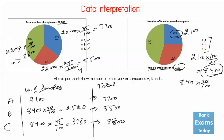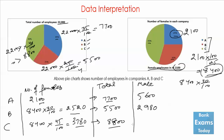For the number of male employees, we simply deduct the number of female employees from the total. In company A: 7700 − 2100 = 5600. In company B: 5500 − 2520 = 2980. In company C: 8800 − 3780 = 5020. So now we have all the data — female employees, total employees, and male employees.